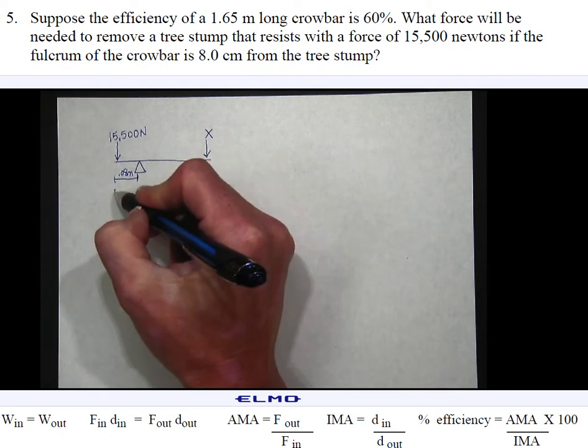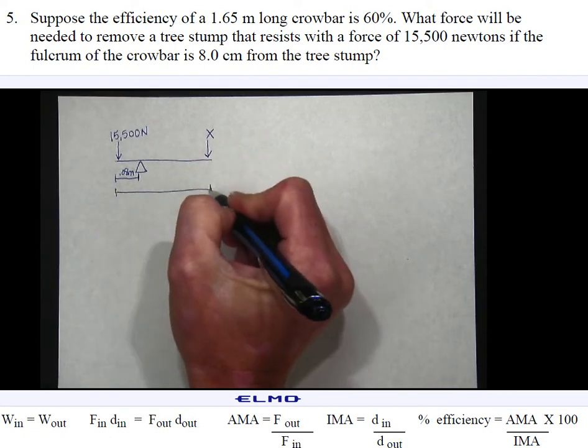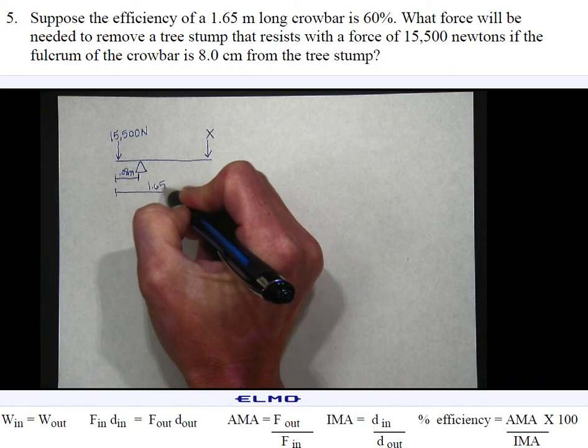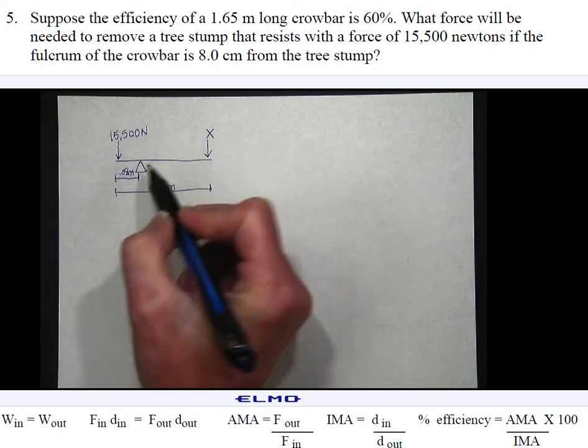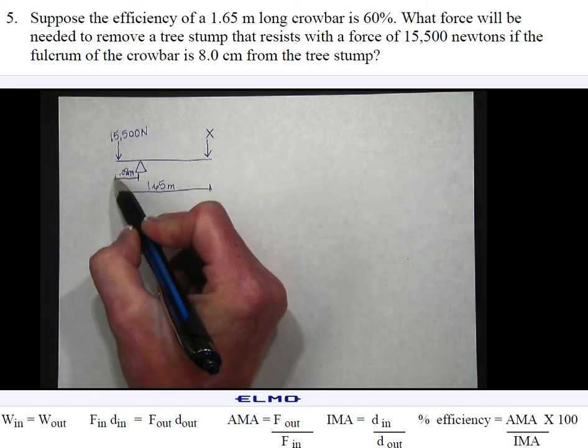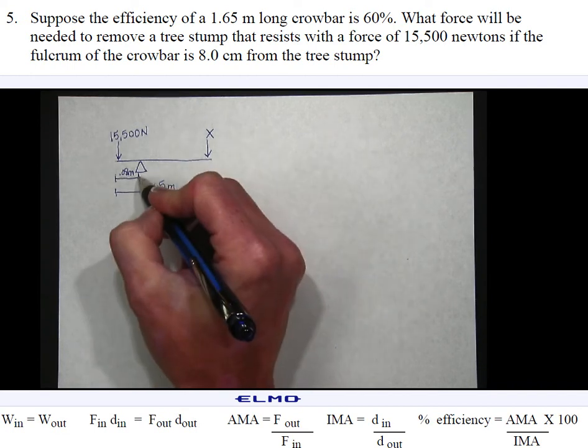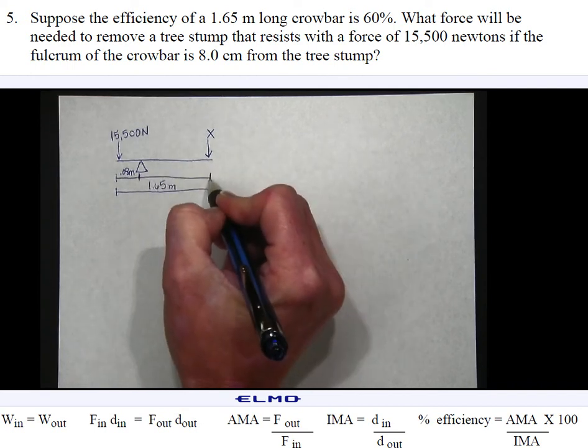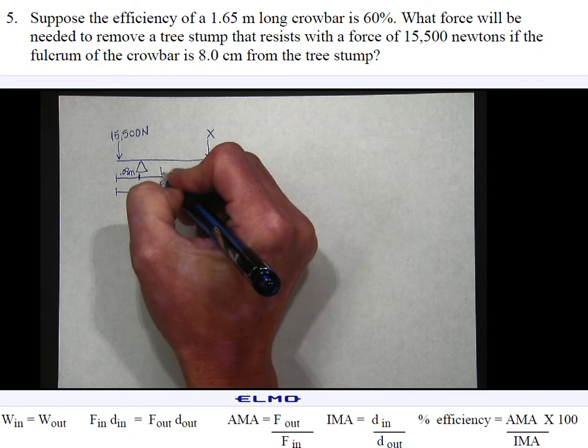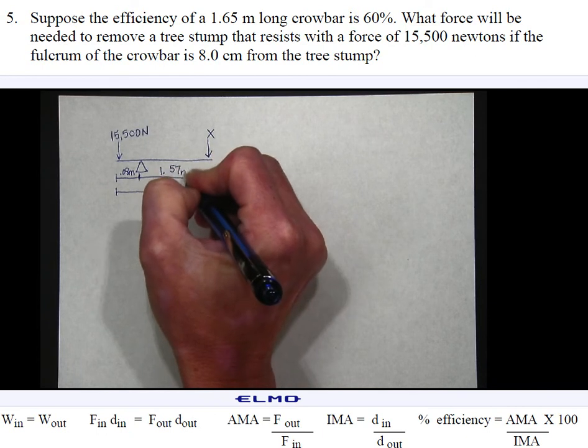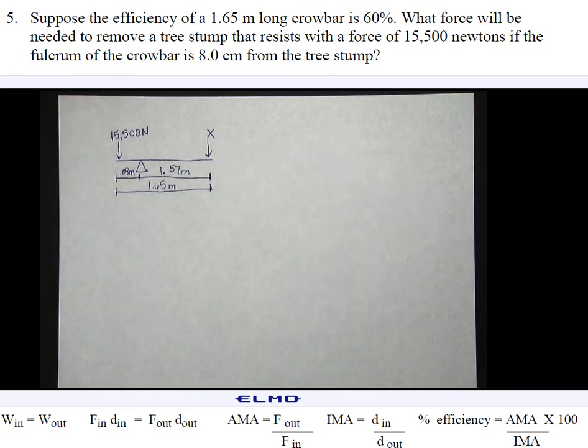As in my last example, the length of the crowbar is 1.65 meters and the length from the resistance force to the fulcrum is 0.08 meters. So when I subtract those two, I get the distance from the fulcrum to the effort of 1.57 meters. So there's an illustration to represent what we're working with.